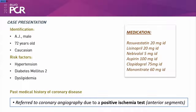We present a case of a 72-year-old male, Caucasian, with past history of hypertension, diabetes, dyslipidemia, and a history of coronary artery disease.